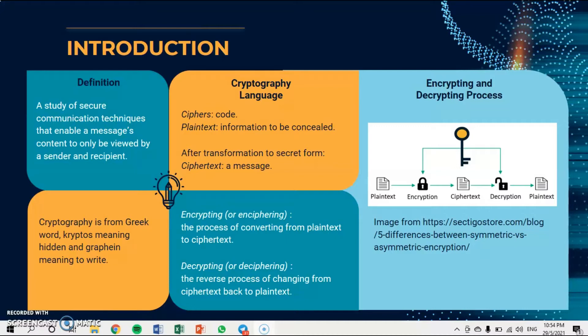It's a reverse process of changing from the ciphertext back to the plaintext. In this diagram, we will see the encryption and decryption process. In encryption process, we see the plaintext will be converted to the ciphertext. And in decryption process, we will see the ciphertext will convert to the plaintext with use of the public key.